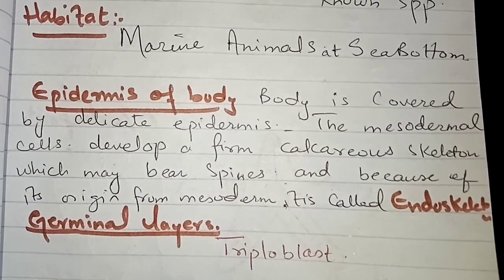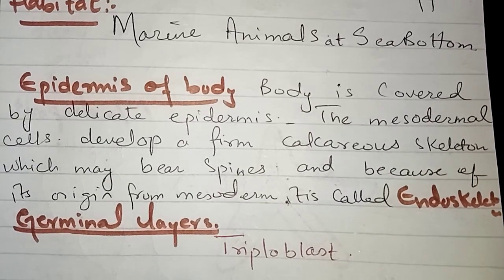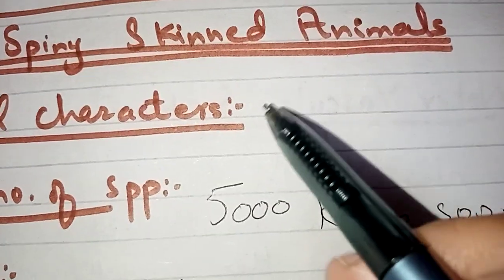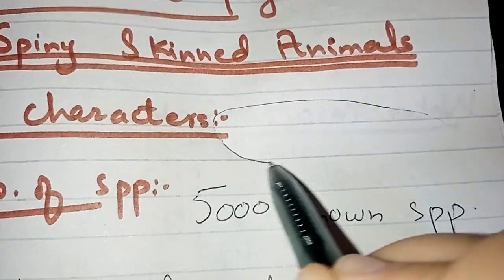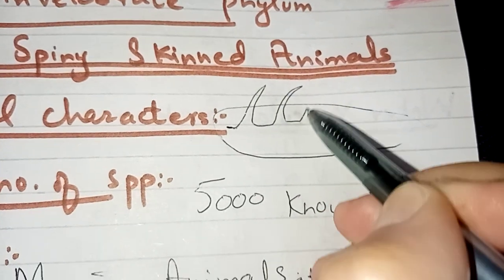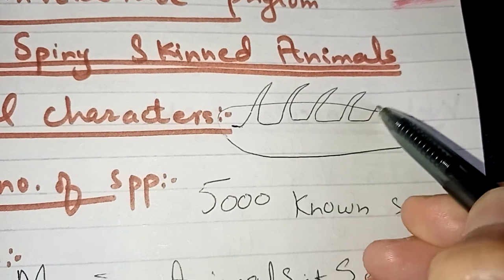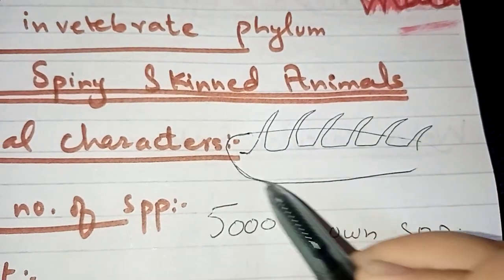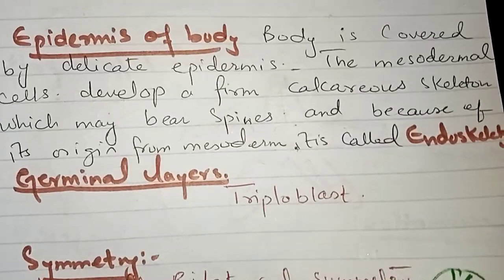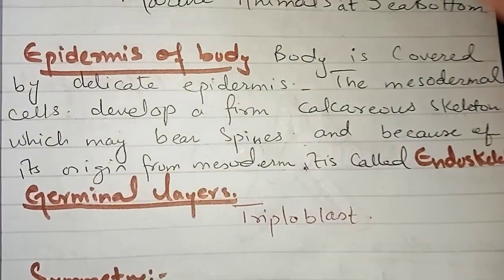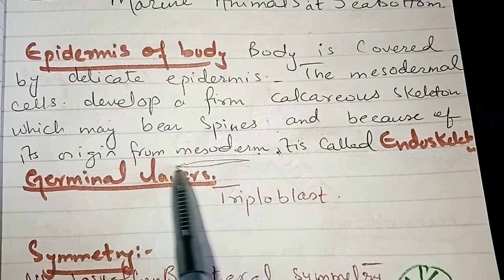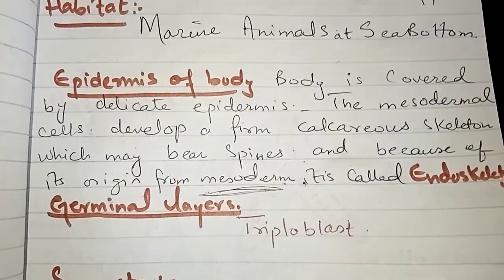The body is covered with an epidermis and mesodermal cells are developed. Calcium skeletal structures are built, which are called spines — this is basically a calcium structure. This structure gives the name 'echinoderm' or 'spiny skin.' The skeletal system is inside the body, so it is called an endoskeleton. Its origin is mesoderm, which is the third germ layer — this is an advanced feature in this group.